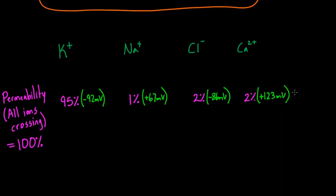But again, 95% of the voting, in a sense, for what the cell is going to agree upon, comes from one ion. It comes from potassium. We just have to add all of this up and get a total. This part right here, 95% of the ions being permeable, multiplied by the membrane potential for potassium, 95% times negative 92.